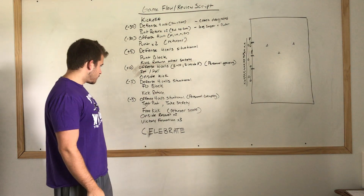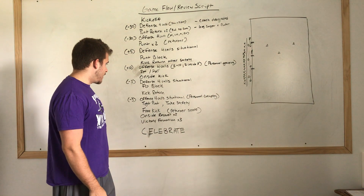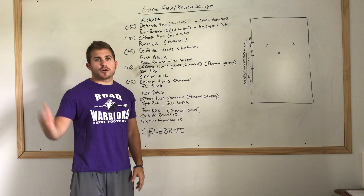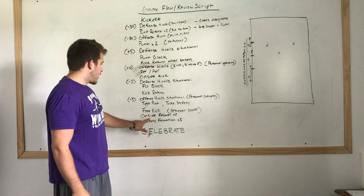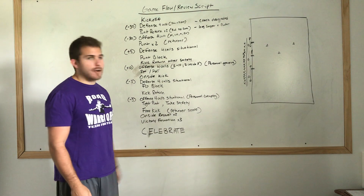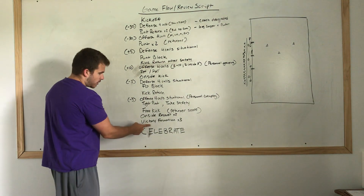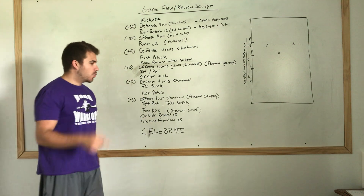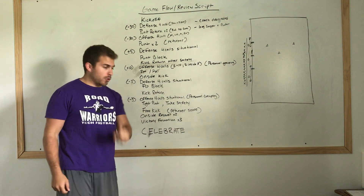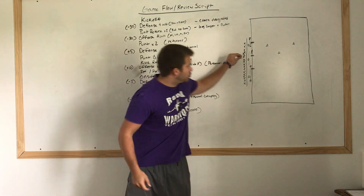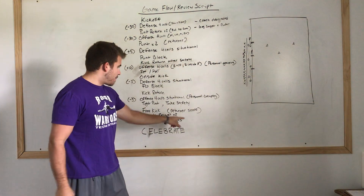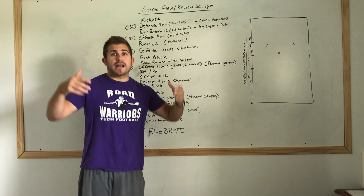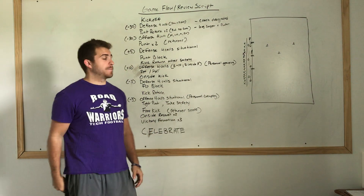We'll tell the returner to score on the free kick. Then we'll run our hands team out and do two reps of onside recover. Then we'll run our offense out, get in victory formation, and kneel three times. On the third rep, we storm the field on the coach's whistle signaling game over — and we celebrate, practicing the victory mindset.